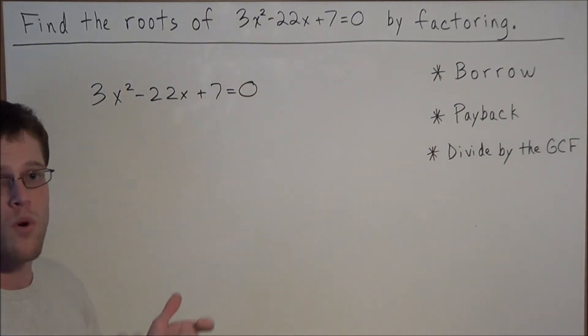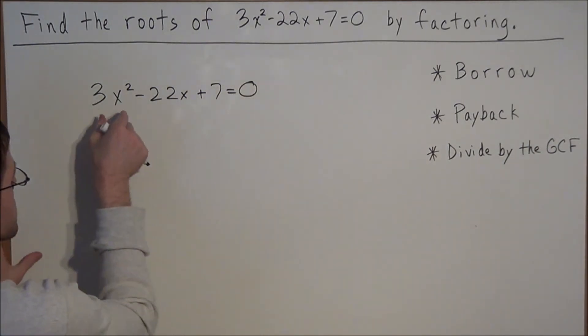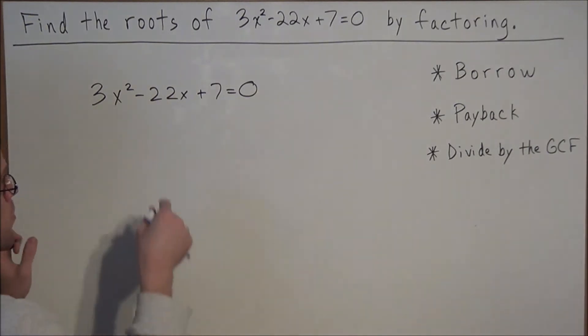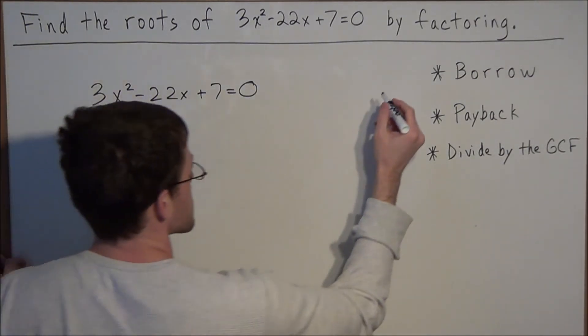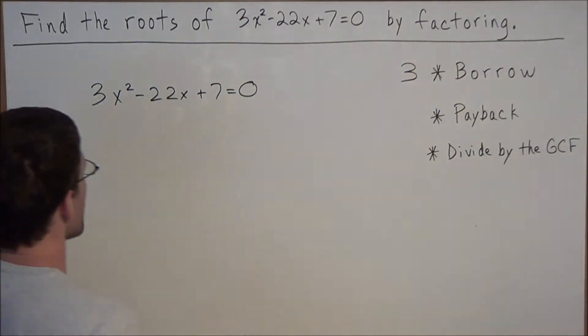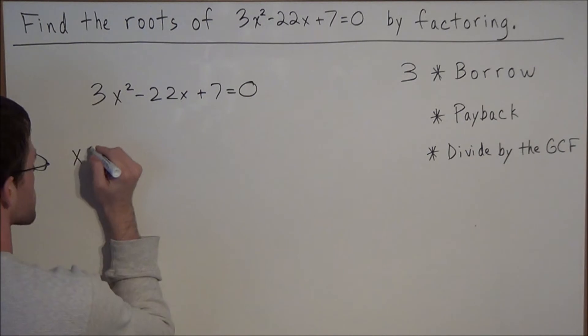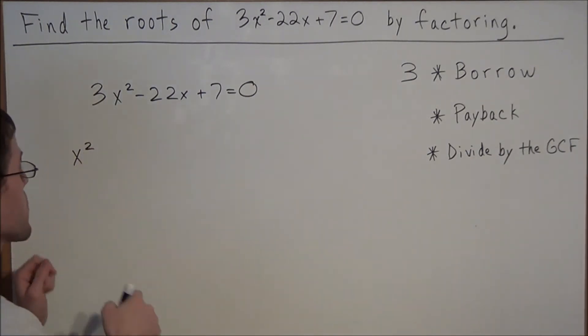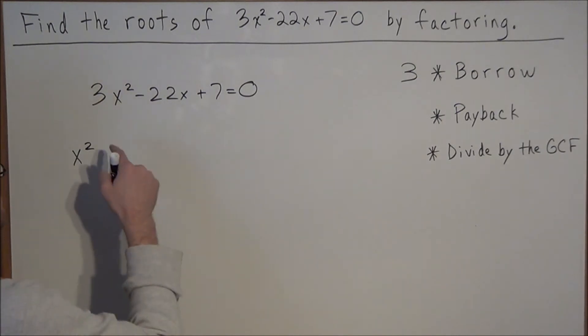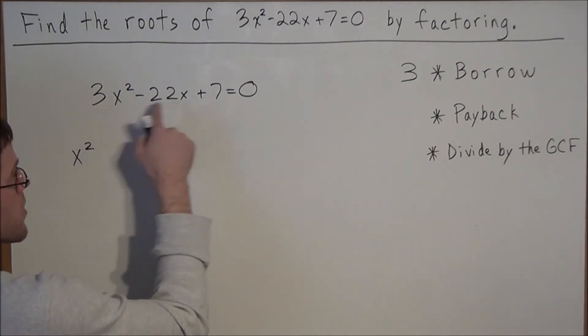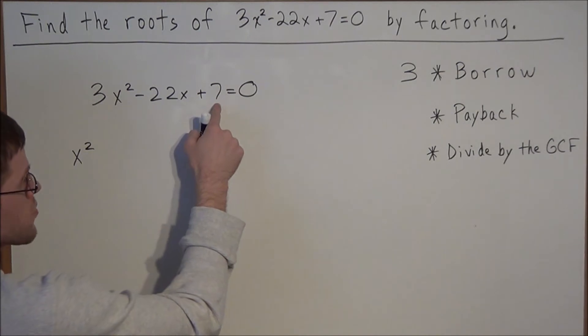The way this technique works is we are going to rearrange the first and last term, but we are going to be targeting the number in front of x squared. We are going to be borrowing a positive 3. To write the next line we start with x to the second power because we want a positive 1 in front of our x squared. We are going to multiply 3 times 7, which is 21.